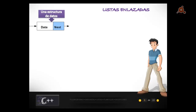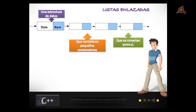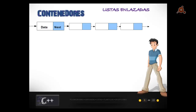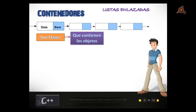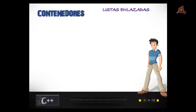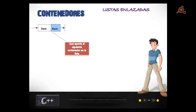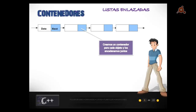Una lista enlazada podríamos definirla como una estructura de datos que consiste en pequeños contenedores que se conectan entre sí. Las listas enlazadas están formadas por contenedores que son clases que contienen los objetos que serán referenciados en las listas. La idea es escribir una clase que contiene un objeto con los datos — puede ser un objeto gato, un objeto rectángulo, etc. — y que sabe cómo apuntar al siguiente contenedor en la lista. Creamos un contenedor para cada objeto y los encadenamos juntos.